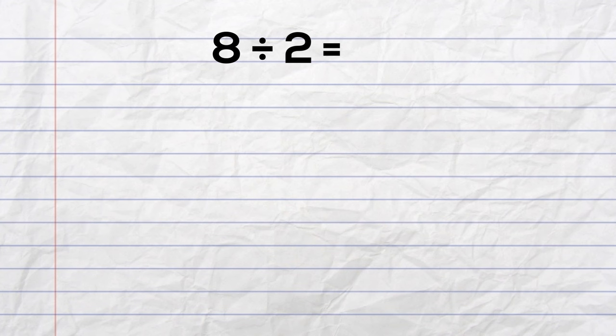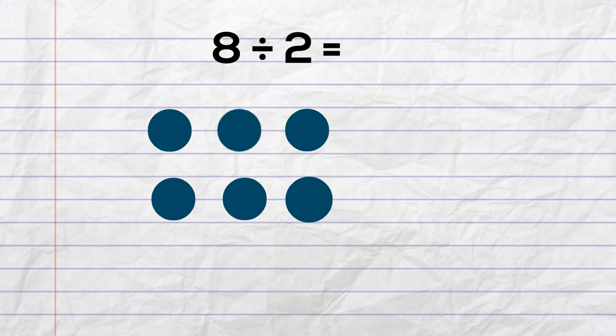So let's divide them into columns that have two each. So I will go one, two, three, four, five, six, seven, eight.